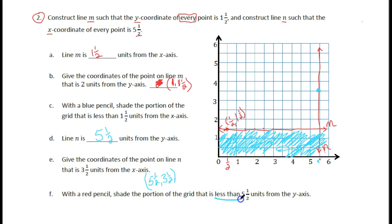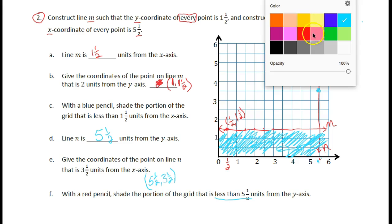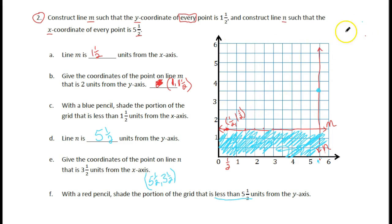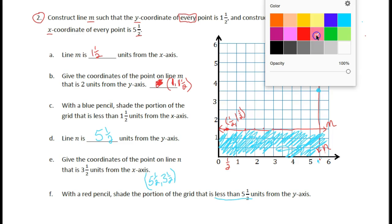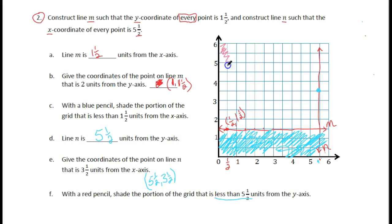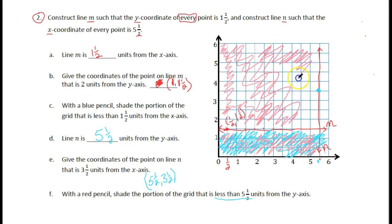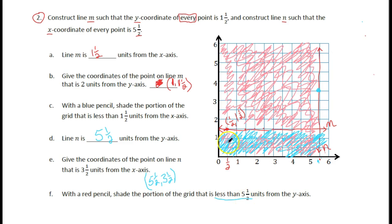With a red pencil, shade the portion of the grid that is less than five and a half units from the Y axis. This point is one half away, one away, two away, and so on — so everything on this side gets shaded. I'm going to use pink instead of red so I don't mess up my lines and numbers. All of this is less than five and a half away from the Y axis, so it all gets shaded. You can see where both colors overlap in the middle.